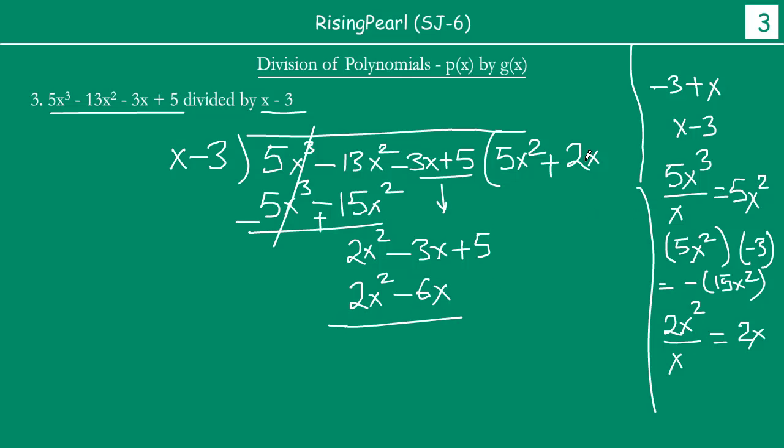Now 2x times minus 3 is minus 6x. So this cancels out.